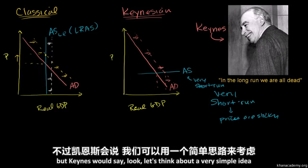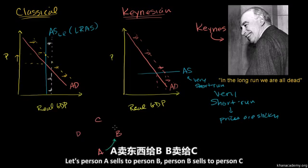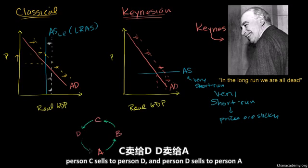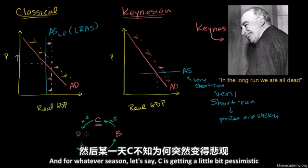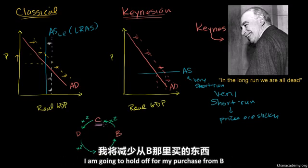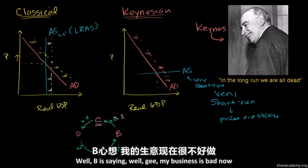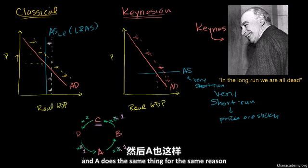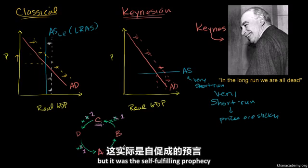Keynes would say, let's think of a very simple idea. Let's say you have Person A, B, C, and D. Person A sells to B, B sells to C, C sells to D, and D sells to A. Let's say they're all selling two units. For whatever reason, C gets a little bit pessimistic — had a bad dream, woke up on the wrong side of the bed — and says, I'm not feeling good about the economy, I'm going to purchase one unit from B instead of two. Well, B's business is bad, so B only purchases one unit too. A and D do the same thing. Now it all comes back to C, and C sees: wow, I was right — but it was a self-fulfilling prophecy.